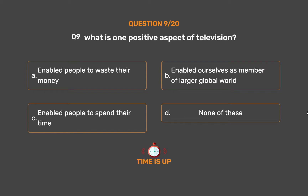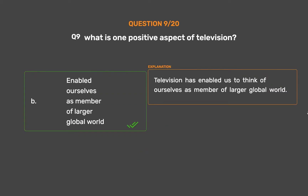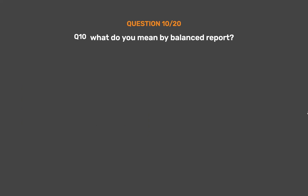The correct answer is Option B: Enabled ourselves as members of a larger global world. Television has enabled us to think of ourselves as members of a larger global world.